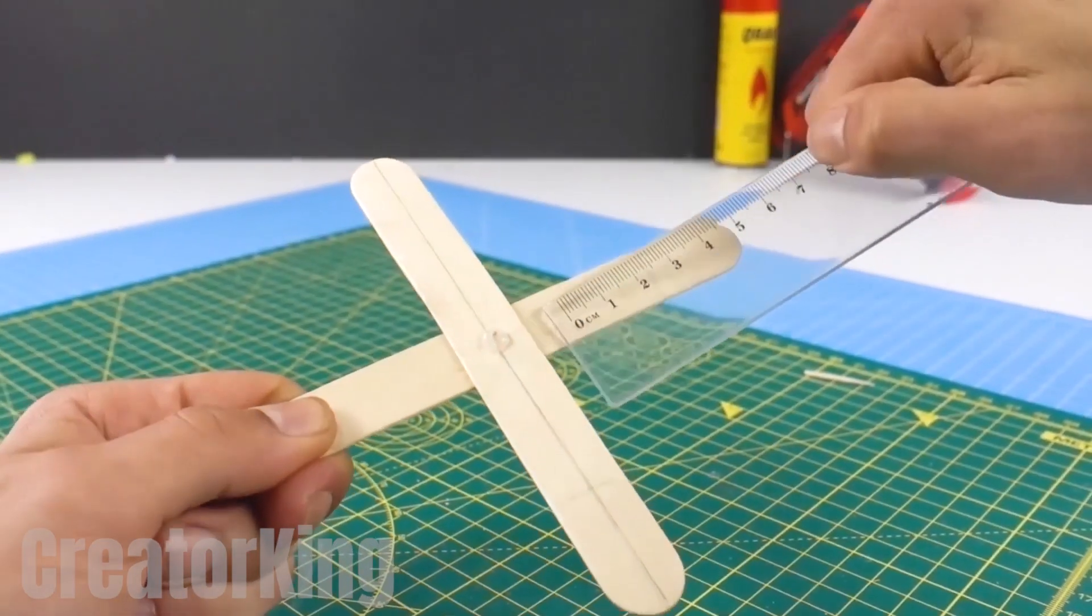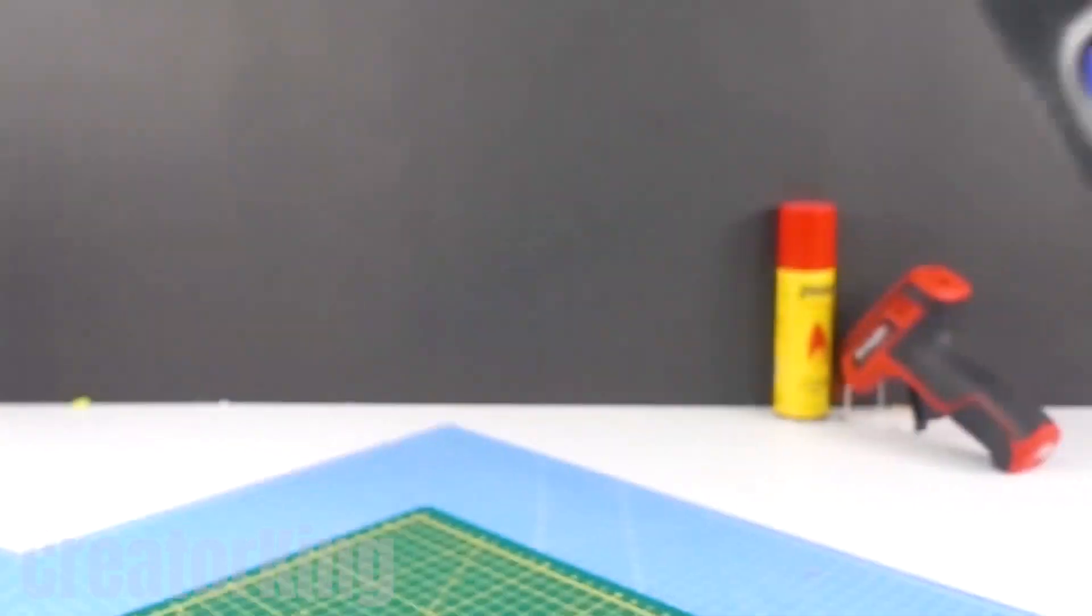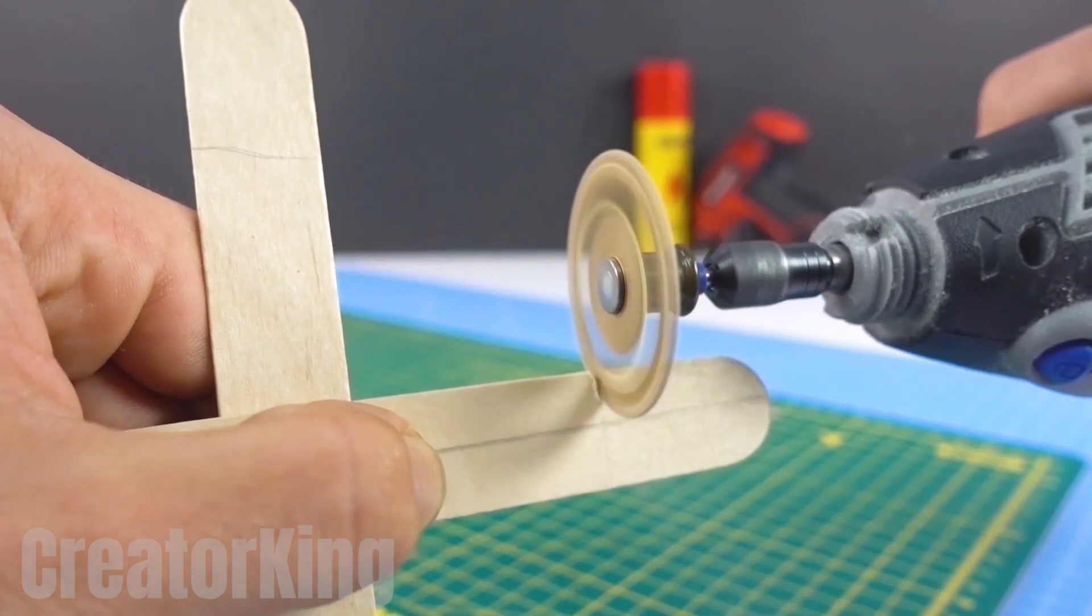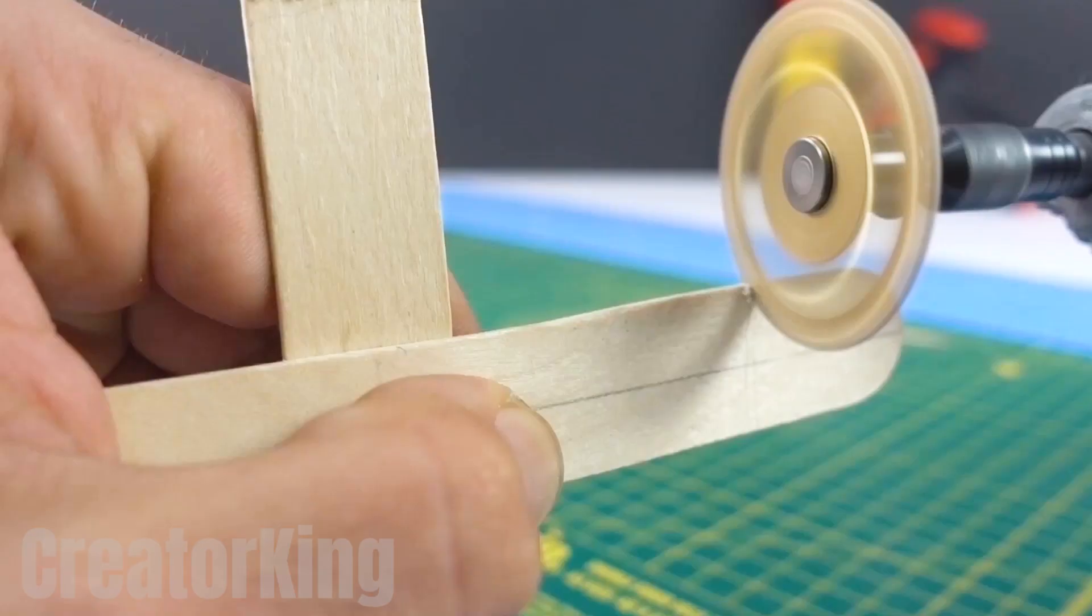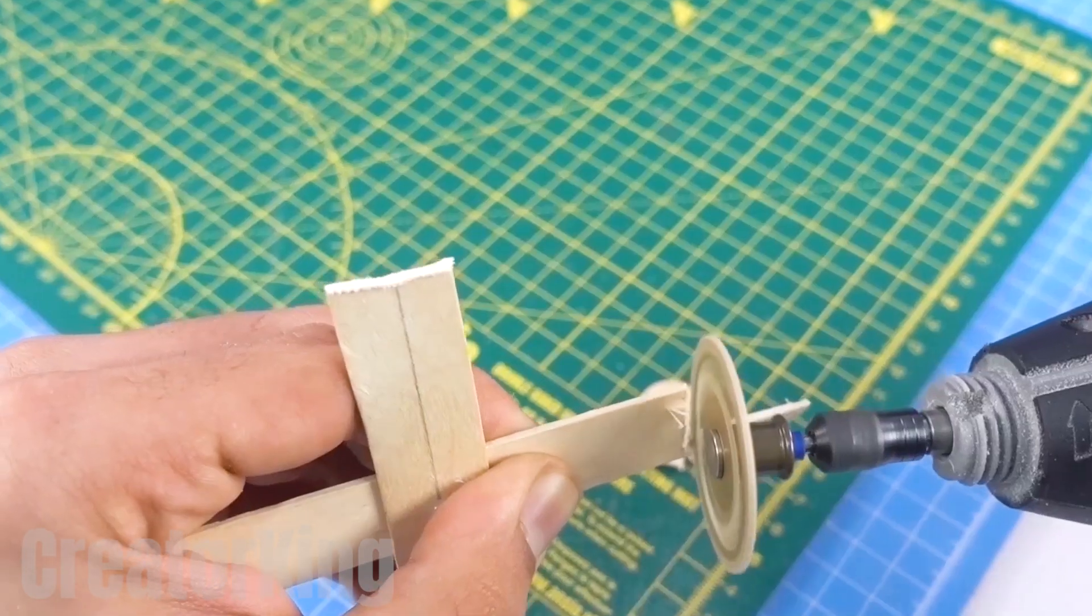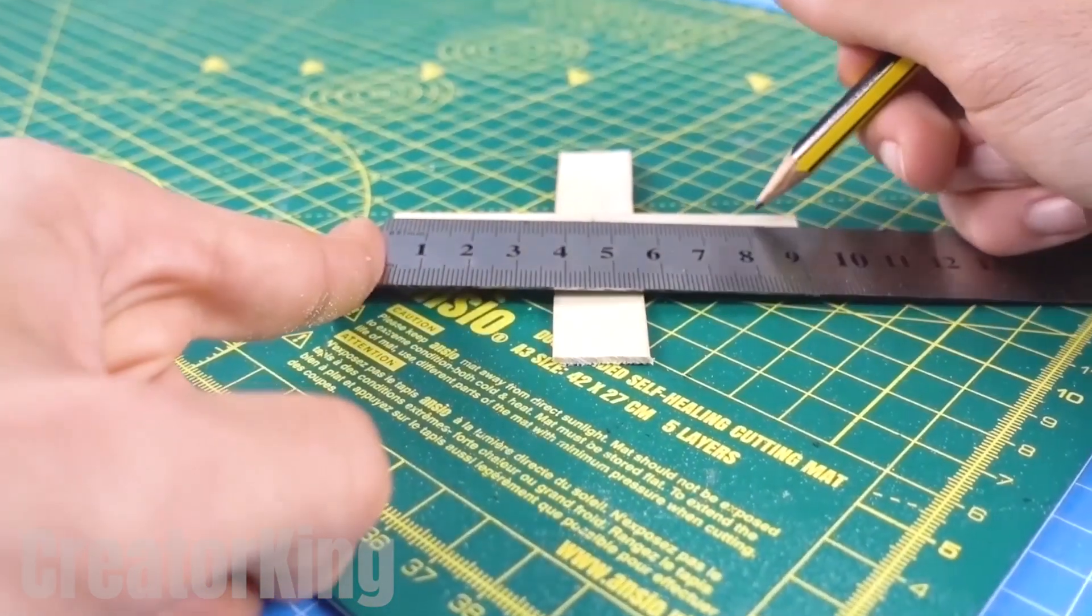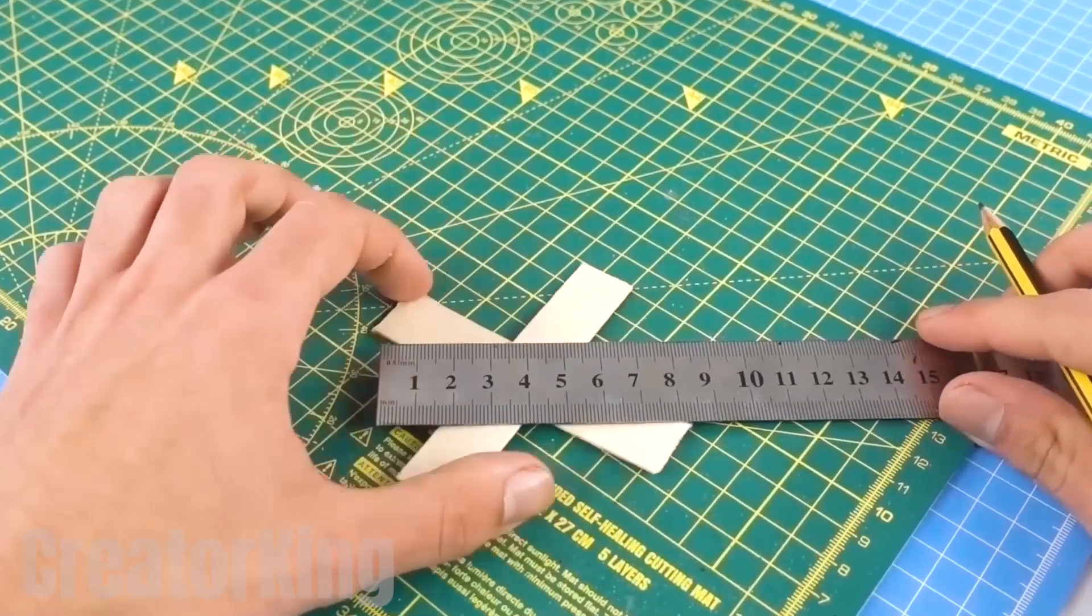With a ruler, mark a line 3.5 centimeters from the center. We'll cut it with our unique and powerful circular saw. Repeat this last step with all ends of the cross. I know it's a lot of measuring and tons of accuracy, but don't complain. You wanted me to show you how to build your own drone, didn't you?